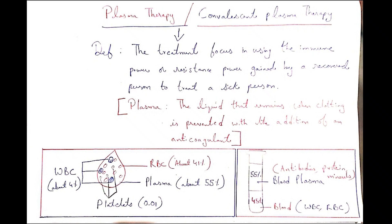So in this figure, blood drop figure, this is just an example. White blood cells are about 4 percent, red blood cells are about 41 percent, plasma is about 54 percent, and platelets 0.01 percent.